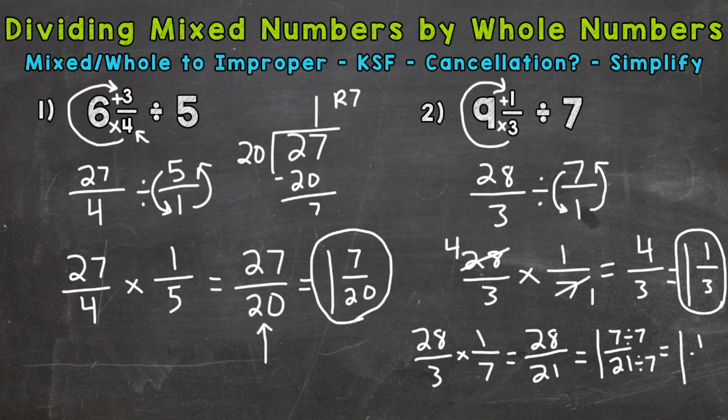And we end up with, we keep our whole the same. 7 divided by 7 is 1. 21 divided by 7 is 3. So we end up with the same answer, 1 and 1 third. So two different paths there, one using cancellation. And then the other we simplified at the end. But in both cases, we got the correct answer.